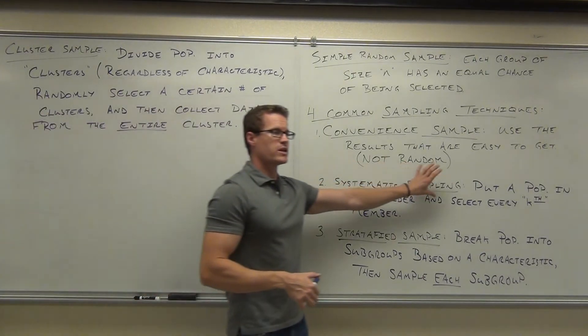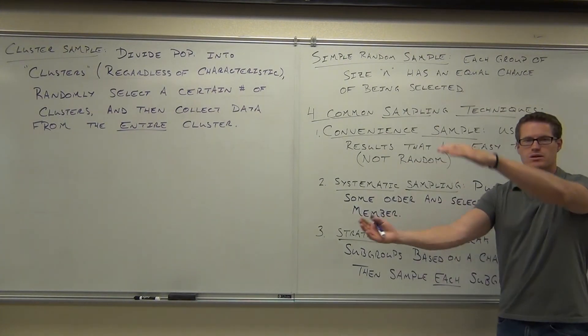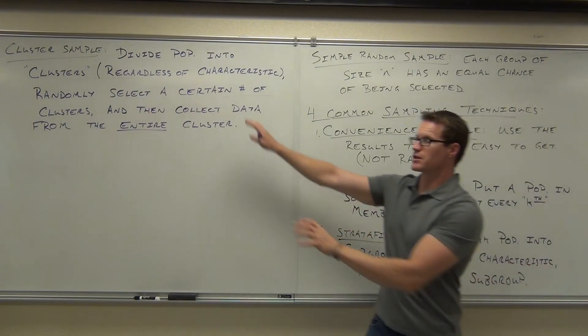So again, systematic is the way you collect small samples. You put everyone in order, you pick every kth item. Stratified is grouping by characteristic, cluster is not.